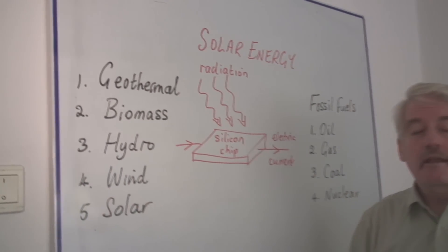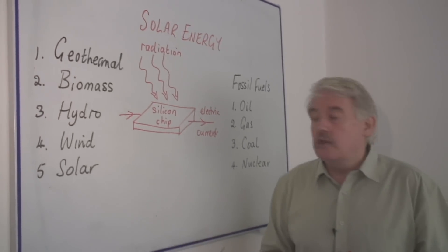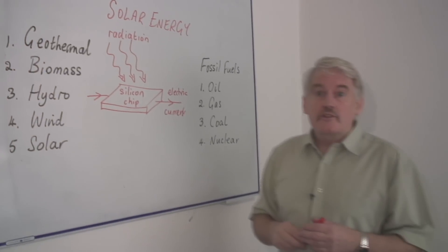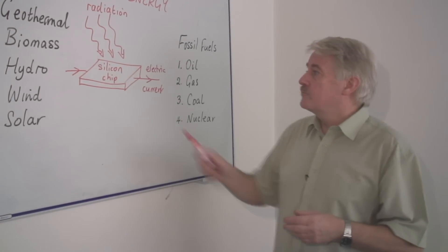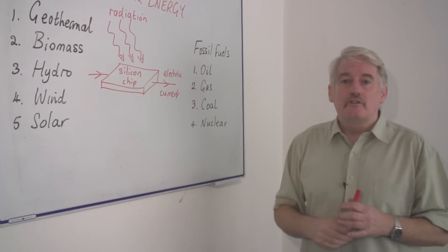So solar energy is a renewable energy. The question is where does it come from? Well it comes from this, which is called a silicon chip.